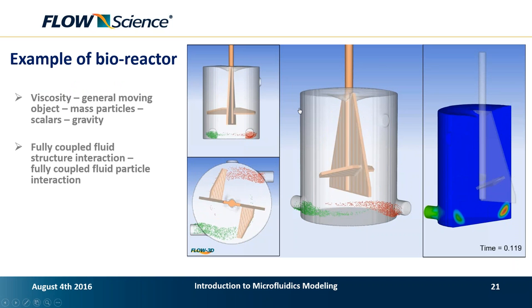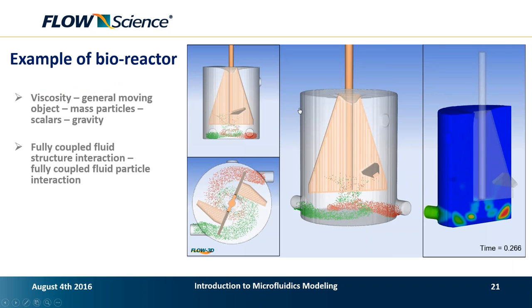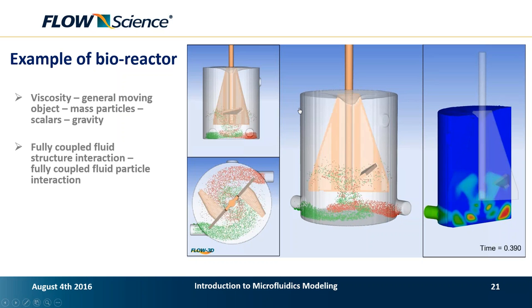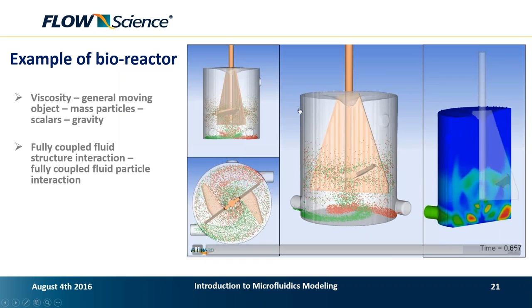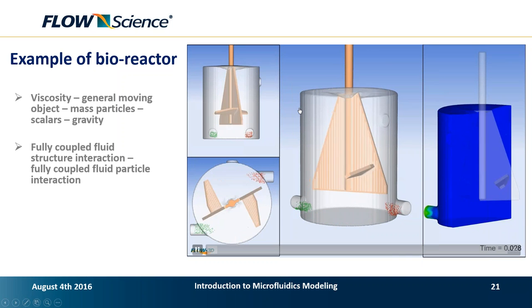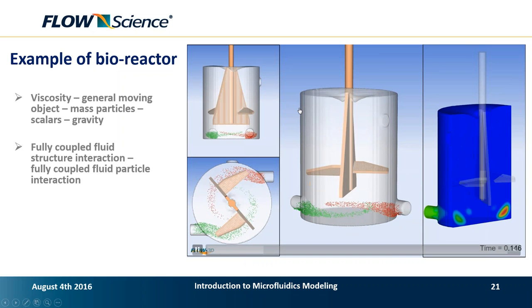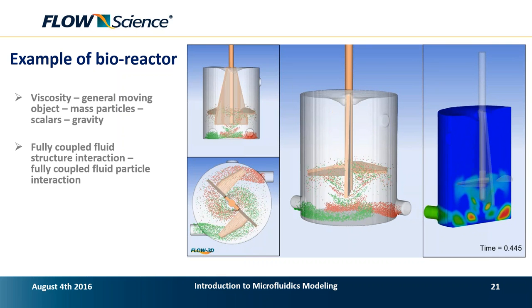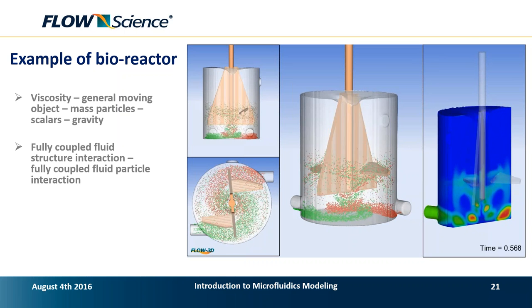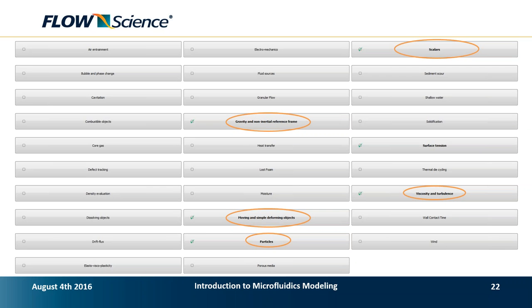Another example is a micro-reactor or micro-mixer where we try to mix particles from different sources mechanically. We can use the general moving objects model to simulate the rotation of a paddle and how particles make their way through the system. This is fully coupled fluid-structure interaction in a rigid body sense with prescribed motion for the paddle. The physics activated include gravity, the moving and simple deforming object module, particles, viscosity, low Reynolds number laminar flow, and scalars to track things.